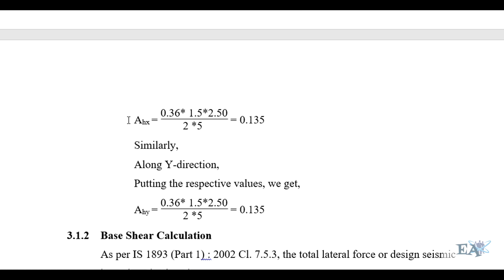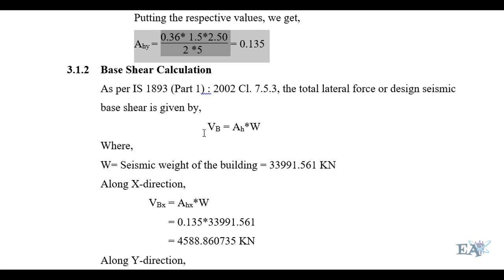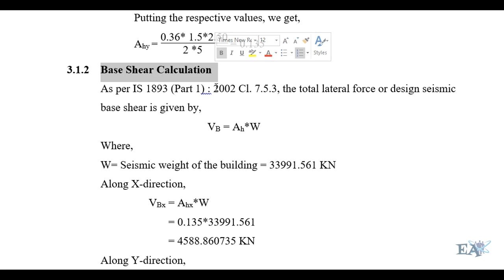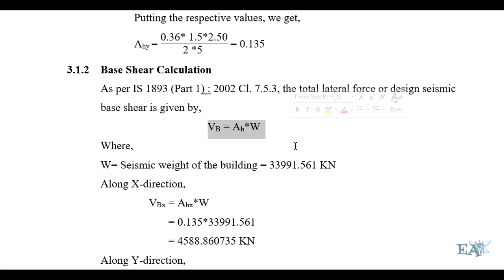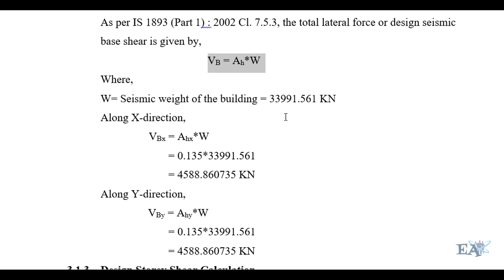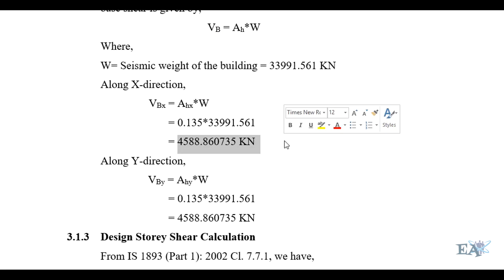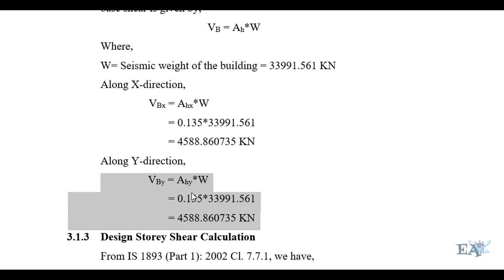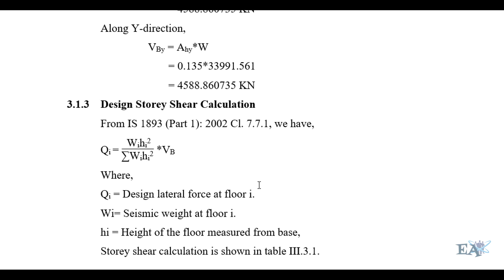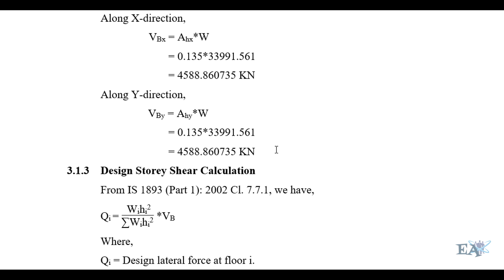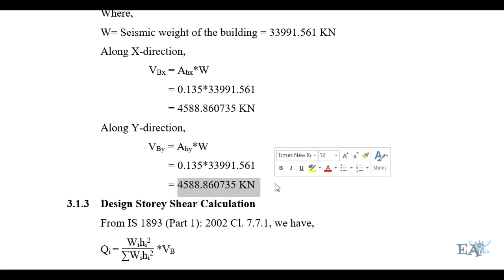Similarly, in the Y direction, AH also comes out to 0.135. After getting AH, the base shear VB = AH × W is calculated. Using the seismic weight W of the building, the base shear in the X direction and in the Y direction are obtained. In this case, the values in X and Y directions are the same, though this may not always hold true.